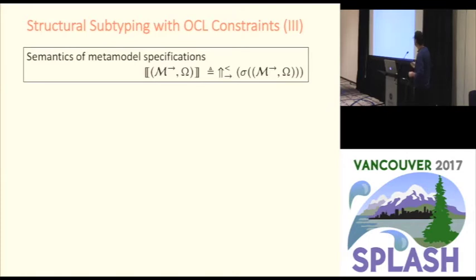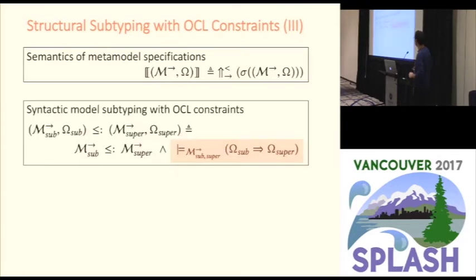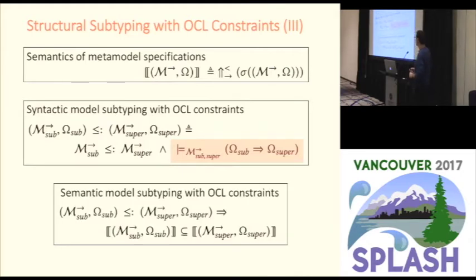We get the semantics — the model type of a metamodel specification — by using the interpretation of metamodels enriched with OCL constraints as defined in Rister's thesis, then translate that semantics to the linguistic semantics. We define the subtyping relationship between metamodel specifications involving metamodels and constraints by using structural subtyping between metamodels and defining a compatibility property in the extension metamodel ensuring that if the constraints of the subtype are satisfied, the constraints of the supertype must also be satisfied.